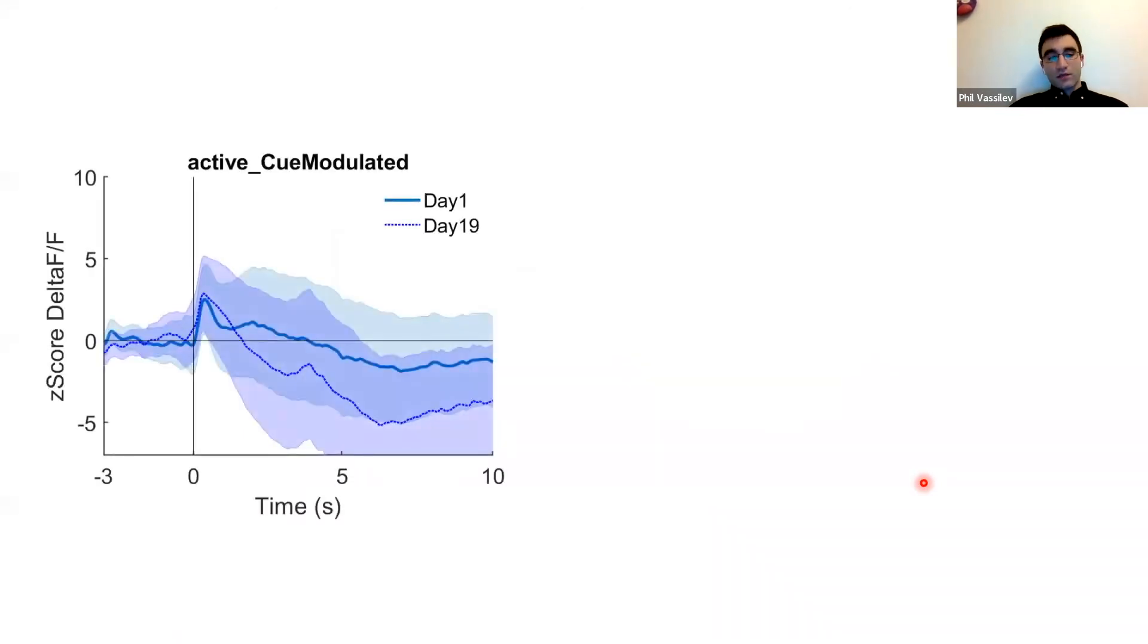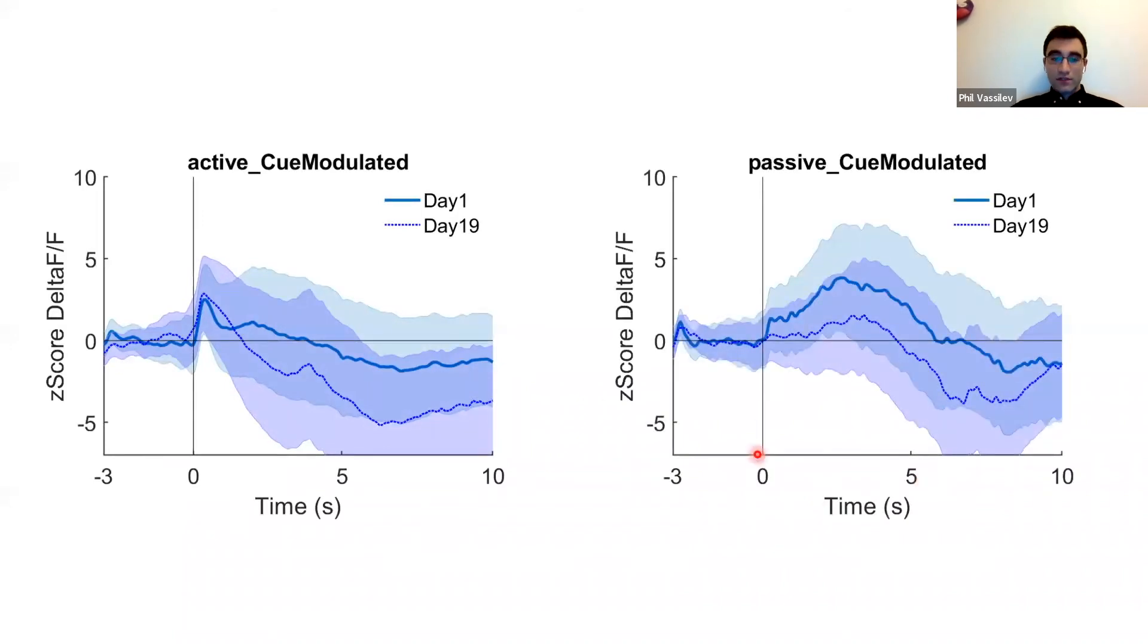Finally, the miniscope data shows that active and passive solvers have different profiles of neural responses in the PFC, with neural responses in passive solvers having a delayed peak and a decrease from day one to day 19, which is not seen in active solvers.